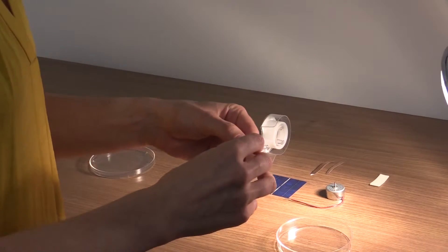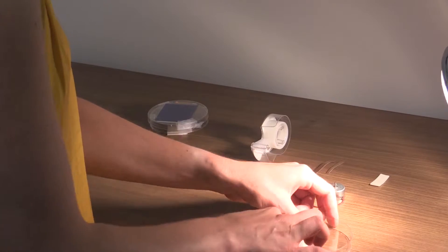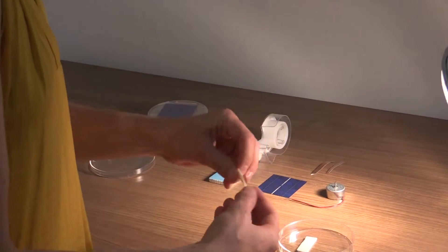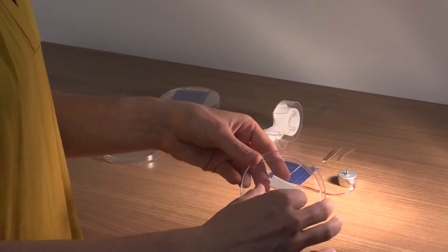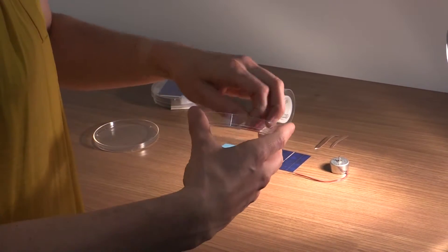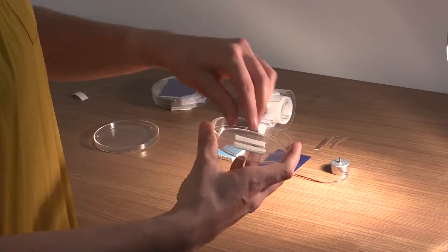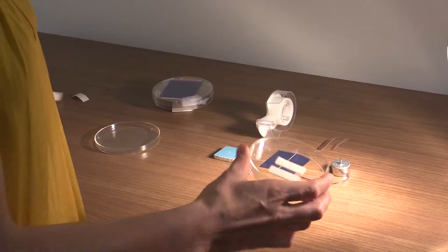Take the foam tape and place it down in the center of the petri dish. You'll want to leave a small gap between your two pieces of tape, then peel off the backing so that the top side of the tape is sticky again.